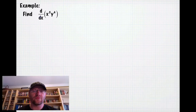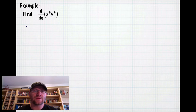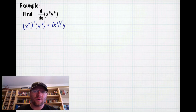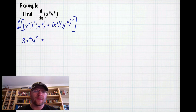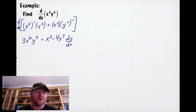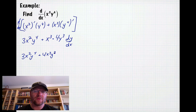A couple more examples: we need to find d over dx of x cubed times y to the fourth. These are two different functions, so we'll use the product rule. We take the derivative of x cubed multiplied by y to the fourth, plus x cubed multiplied by the derivative of y to the fourth. Taking those derivatives, we get three x squared y to the fourth plus x cubed times four y cubed, and since we're taking the derivative of a y with respect to x, we plug in the dy over dx at the end. Written out fully: three x squared y to the fourth plus four x cubed y cubed dy over dx.